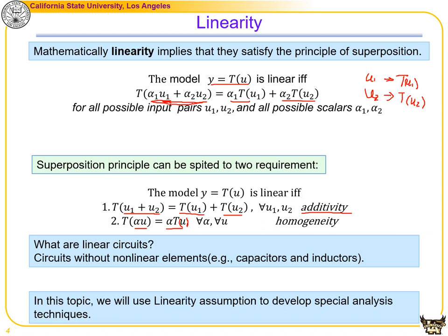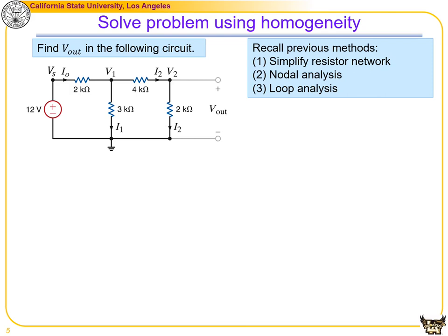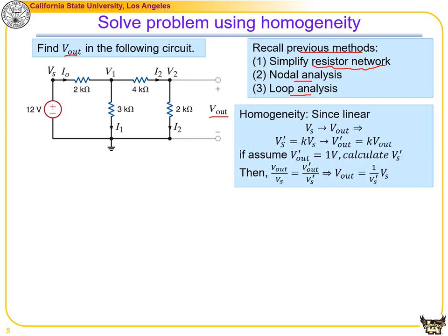We will use the linearity assumption to develop special analysis techniques. To solve for Vout using homogeneity: since the circuit is linear, giving power supply Vs results in output Vout. Giving another supply Vs' equal to k times Vs should yield the same scaled output Vout' equal to k times Vout. If we assume Vout' equals 1 volt, we can calculate Vs'.